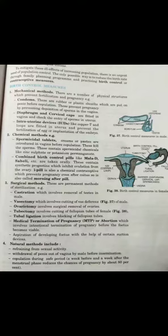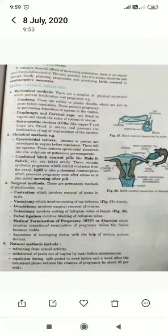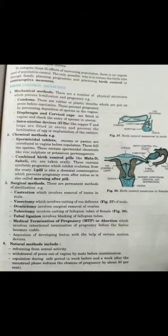Mechanical methods work by preventing fertilization and thereby preventing pregnancy. Examples include condoms, diaphragm, cervical caps, and intra-uterine devices like the copper-T placed inside the uterus.